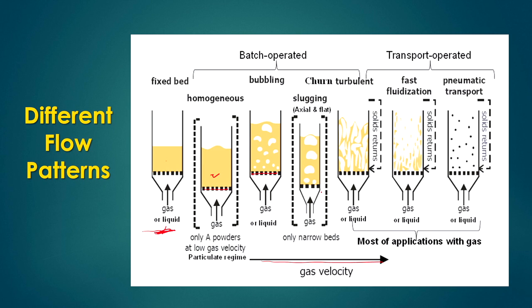If you increase gas velocity further, at high gas velocity the bubbles formed do not have any particular shape — they show a churning condition inside the bed. There will be arbitrary shapes: some bubbles very small, some longitudinal, some occupying the whole axial position in the bed. This is the churn turbulent flow pattern, shown in the figure as a churning condition of gas distribution inside the bed.